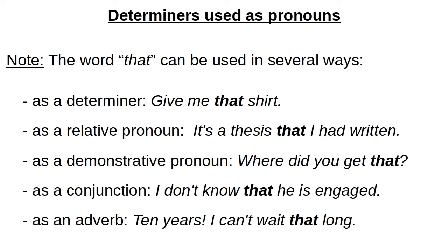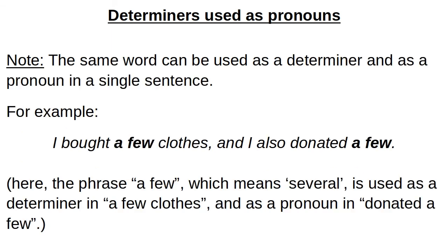The word 'that' can also be used as an adverb before another adverb or adjective — for example, 'I can't wait that long.' It can also be used as a conjunction connecting two clauses — for example, 'I don't know that he is engaged.' Also note: the same word can be used as both a determiner and a pronoun in a single sentence. For example, 'I bought a few clothes and I also donated a few.' Here 'a few' is a determiner in 'a few clothes,' whereas it is used as a pronoun in 'donated a few.'